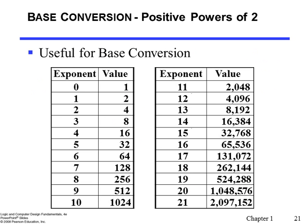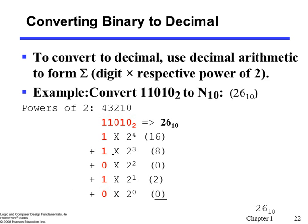Here are the values of powers of two when the exponent varies from zero to twenty-one, along with their equivalent decimal values. I strongly encourage you to memorize the values for exponents zero through ten — for example, two to the tenth is 1,024 and two to the sixth is 64. These are very frequently used in digital systems.